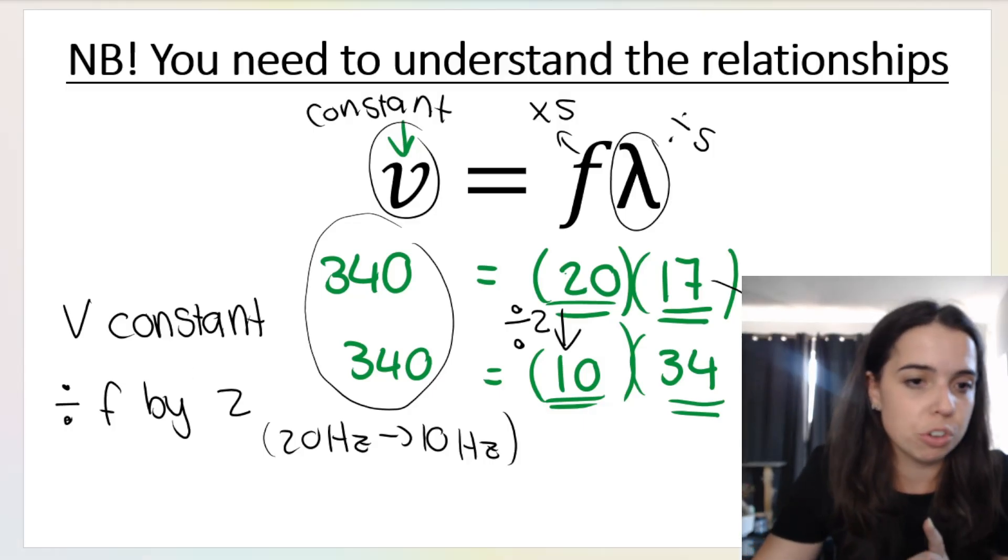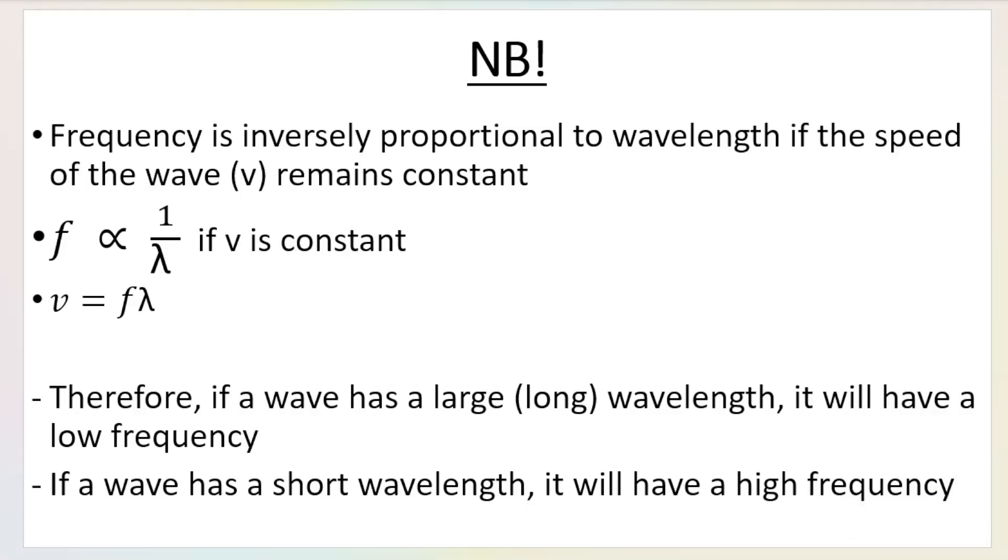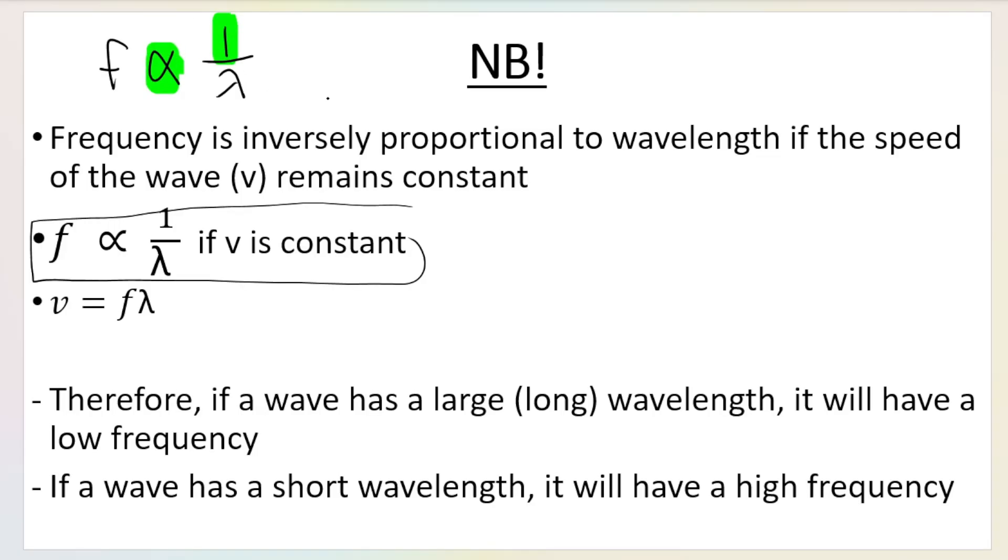It's called an inversely proportional relationship. Frequency is inversely proportional to wavelength, and we write it like this: f ∝ 1/λ. If you see that symbol and one over something, one divided by something, then you know that it means frequency is inversely proportional to wavelength. But this relationship is only true if v is constant.